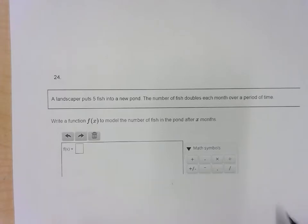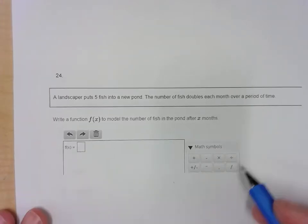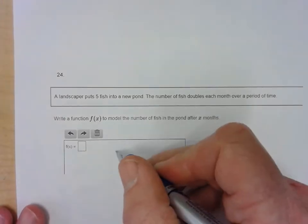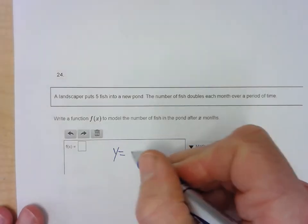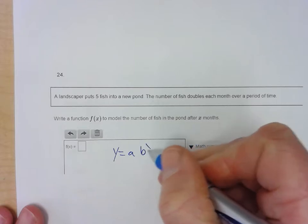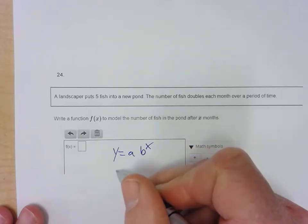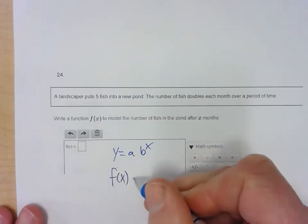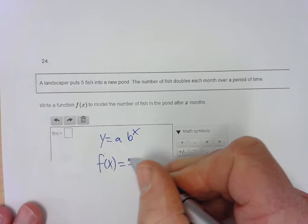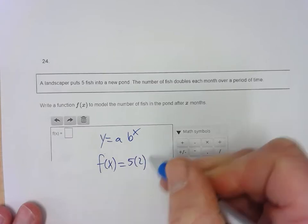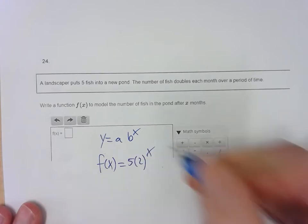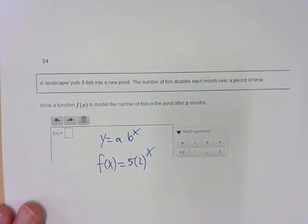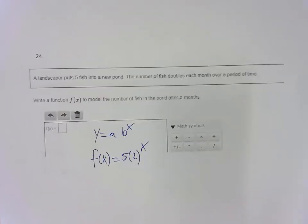Question 24: Fish in a pond — this is exponential growth, using y equals a times b to the x. You have 5 fish in the pond and they double, so f of x equals 5 times 2 to the x. That's the answer.